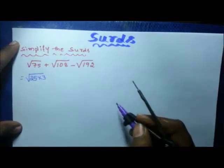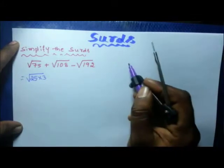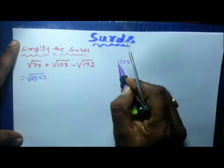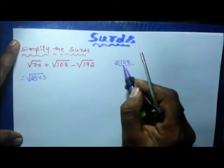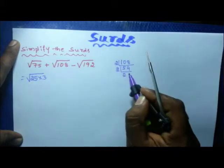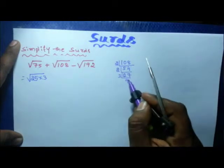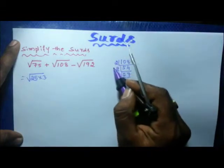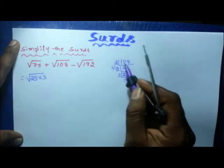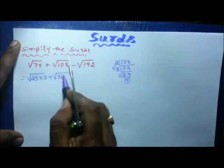For 108, it is a bigger number and difficult to split mentally, so another method is used — find the prime factors. Dividing 108 by 2 repeatedly: 2 times 54, 2 times 27, then 3 times 9. So we get 9 and 4 as perfect square factors. Multiplying these: 9 times 4 is 36. And 36 into 3 is 108, so 36 is the square number.